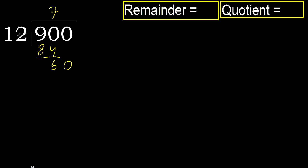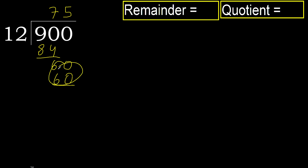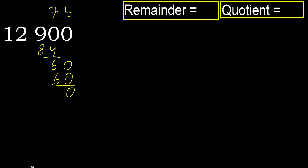Bring down 60. 12 multiplied by 6 is greater. Multiplied by 5 is 60, which is not greater. Subtract — remainder is 0. There is no next number, therefore finish.